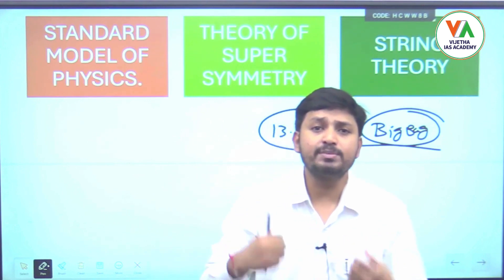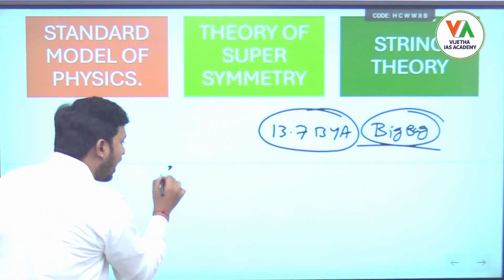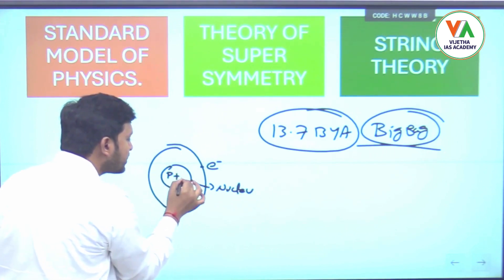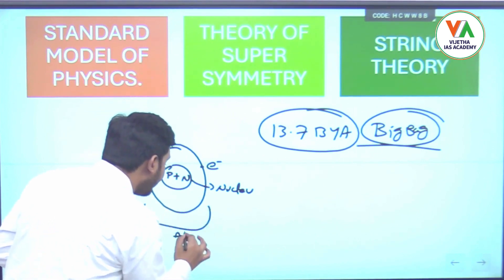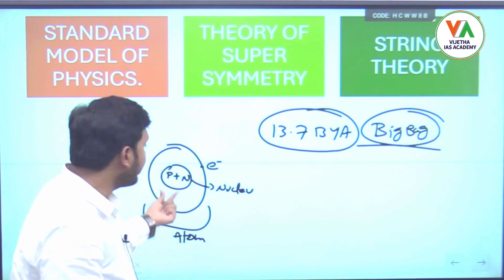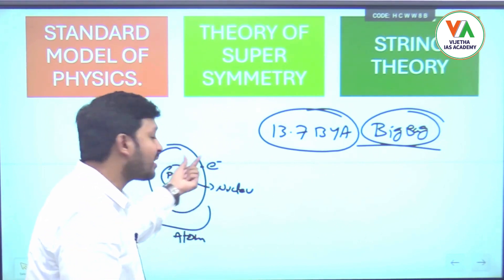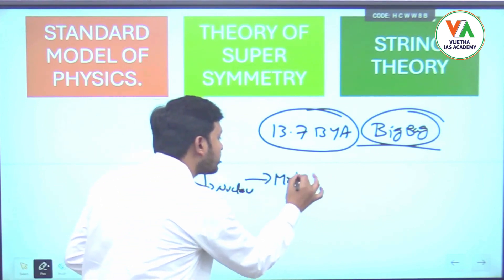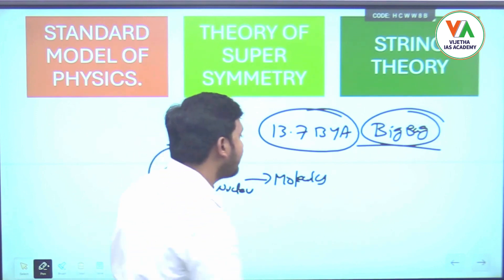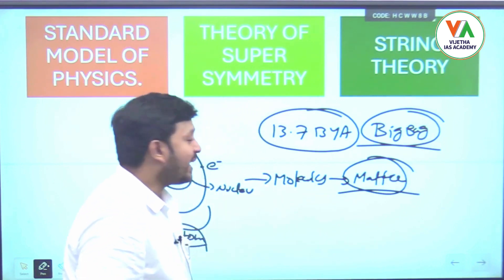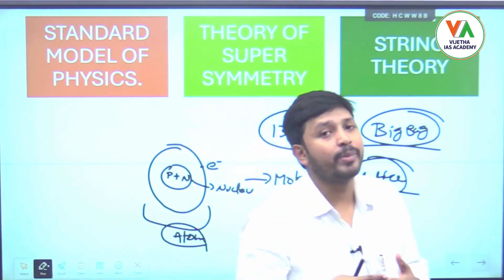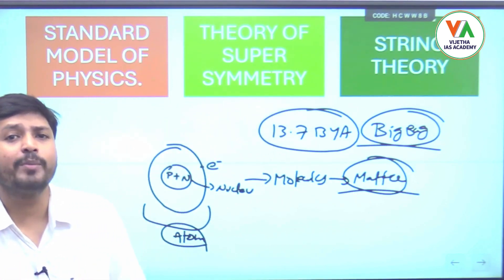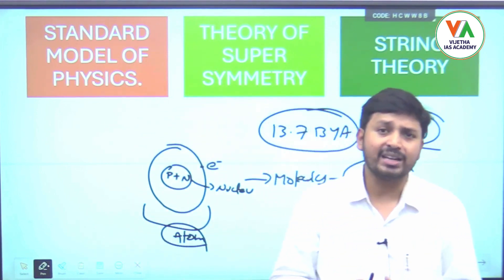Matter came into existence — but from where? If we look at an atom, it has electrons and a nucleus. Inside the nucleus, we have protons and neutrons. This entire structure is an atom, and inside this atom we have different subatomic particles. When different atoms came together they form molecules, and different molecules came together to form different matter — all coming from subatomic particles.